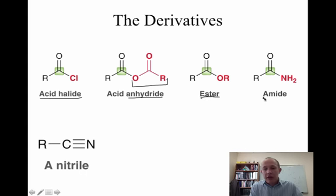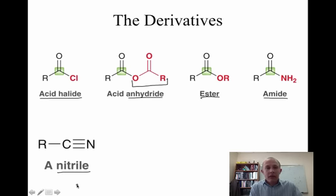Nitrogen-containing groups are called amides. And a carbon-nitrogen triple bond, which differs a little bit because we don't even have a carbon-oxygen double bond anymore, is going to be called a nitrile — and we'll talk about those and why we consider those carboxylic acid derivatives in the last video.